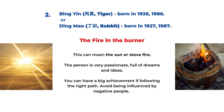The second type is Bing Yin and Ding Mao, with birth years of 1926, 1986, 1927, or 1987. This type is called the fire in the burner, which can mean the sun in nature or the fire on the stovetop in the house. Fire is the five element part. This person is very passionate and full of dreams and ideas, just like the burning fire. You can have big achievement if you follow the right path — meaning you should avoid being influenced by negative people, and don't make decisions impulsively or do anything harmful or illegal.